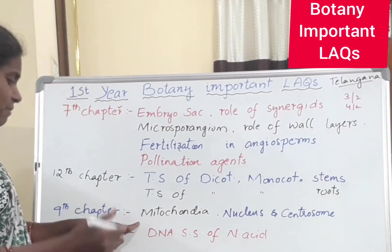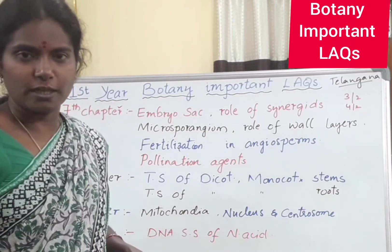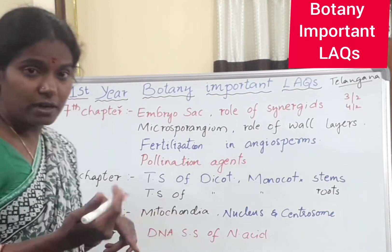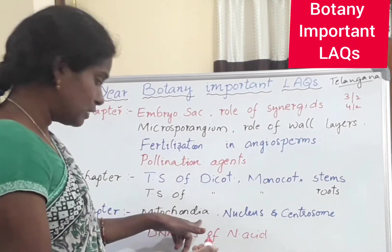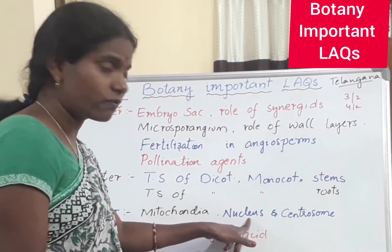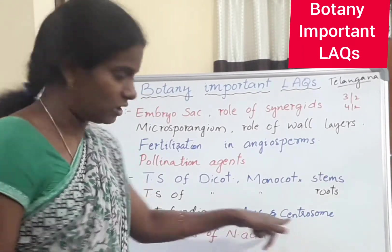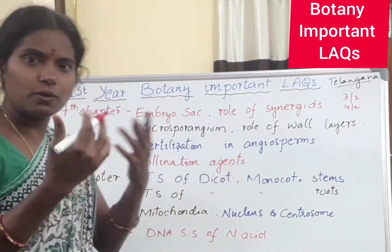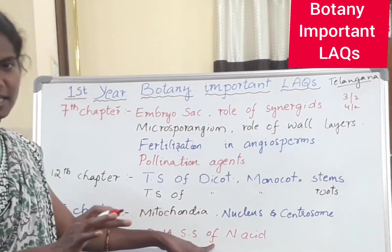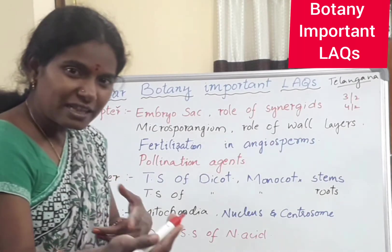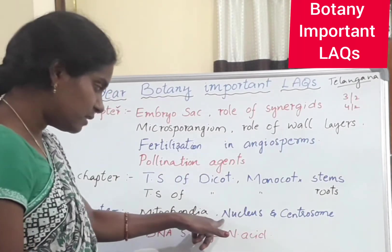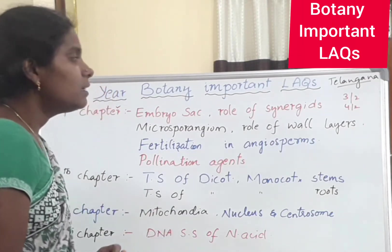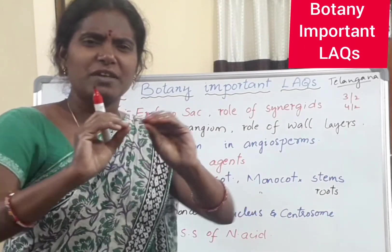So we should study both ninth and tenth chapters. From Chapter 9, the choice of coming questions are: mitochondria — how we say that the mitochondria is the powerhouse of the cell — as well as nucleus and centrosome structure and function. Read these two. But there is no confirmation because last year also the same was expected but they changed and asked from Chapter 10 — secondary structure of nucleic acids, that is DNA.